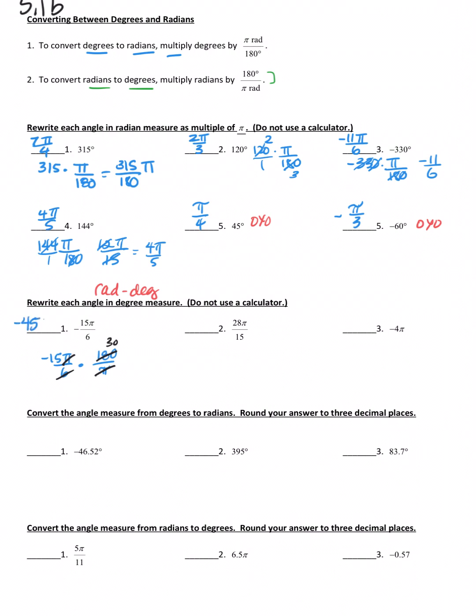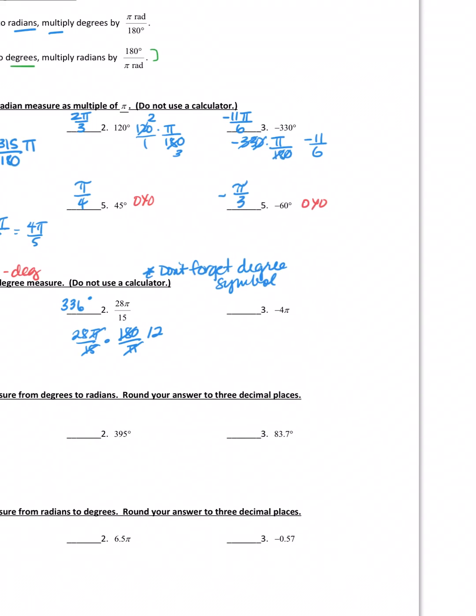And then I know 6 goes into 180 thirty times. And then it's just 30 times 15, which is negative 450. Now don't forget the degree symbol. That's going to be really important. If you don't put that on there, it could be assumed it's a radian, so we don't want to do that. So 28π over 15 times 180 over pi. The pi's cancel. 15 goes into 180 twelve times, and 12 times 28, if I use my calculator, I get 336 degrees.